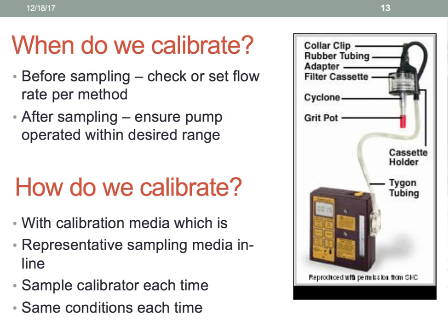Here is another example of a sampling train, not a calibration train. You have your pump connected to your inlet, here's your Tigon tubing connected to the inlet of your cyclone. The air is pulled in here and flows gently to the cyclone. It spins around, and the particles that are too heavy fall down into the grit pot. Those that are light enough attach themselves to our filter.